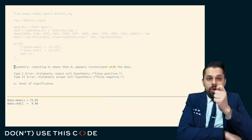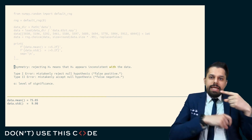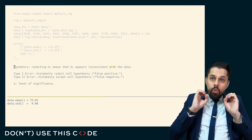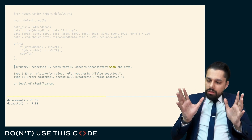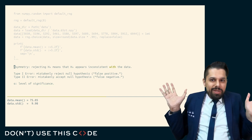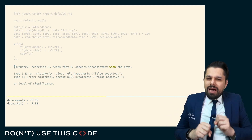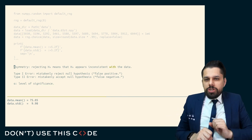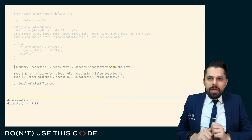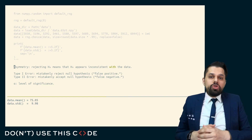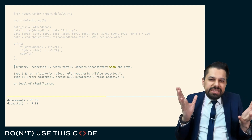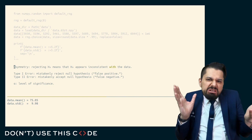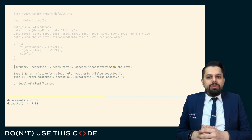Bear in mind that accepting or rejecting the null hypothesis is an asymmetrical thing. When you reject the null hypothesis, you say: my hypothesis was that nothing happened, but it's not consistent with the data, so I'm going to reject that and say something really happened. Rejecting the null hypothesis is a fairly strong statement. But accepting the null hypothesis — failing to reject it — is not that strong of a statement. It just says the data is consistent with nothing happening, but I don't really know. Maybe there's something lurking out there.